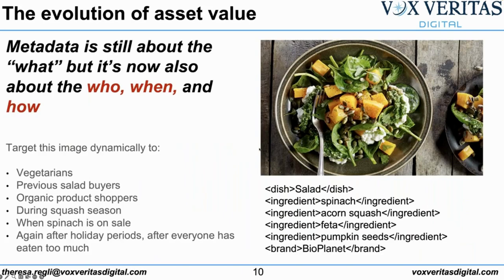When we think about this evolution of asset value — moving from DAM 1.0 to 2.0 and then to 3.0 — it's still largely about the metadata in addition to the technical integration. It's not just about what an asset is about, but also about who, when, and how. How do we use our assets with the right people? How do we target them to the right people at the right time and do it dynamically so we can generate more value in an automated way and get more return on our assets?